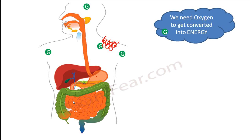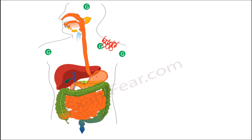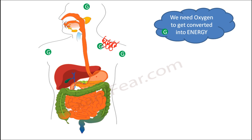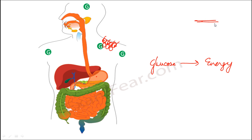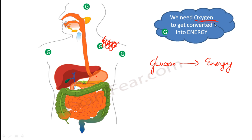Now, what do the cells do with this glucose? The cells cannot utilize that food directly — they need energy, not glucose. So the cells convert this glucose into energy inside each and every cell. For this conversion to take place, the cells need oxygen. Oxygen is needed by the cells to convert this simplest form of food into energy, and that is why we need oxygen.